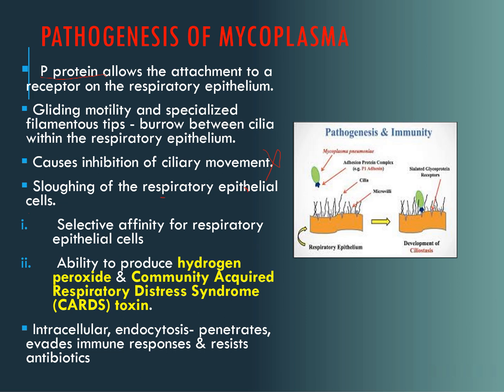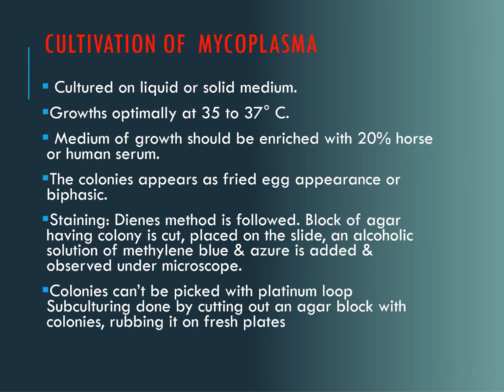They have special affinity for respiratory epithelial cells. Additionally, they produce hydrogen peroxide and also produce a toxin called CARD toxin, which stands for Community Acquired Respiratory Distress. They can be intracellular — they can get endocytosed, they can also penetrate and invade deeper into the tissues, and they evade the immune response and resist antibiotics.